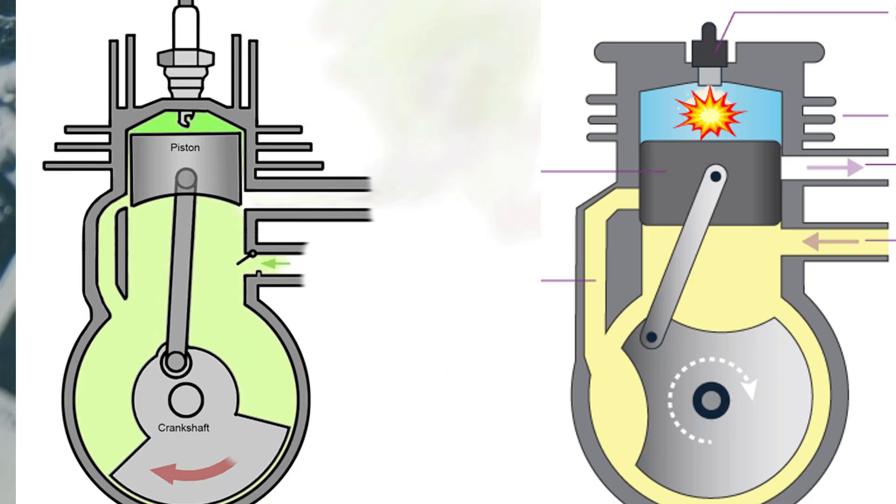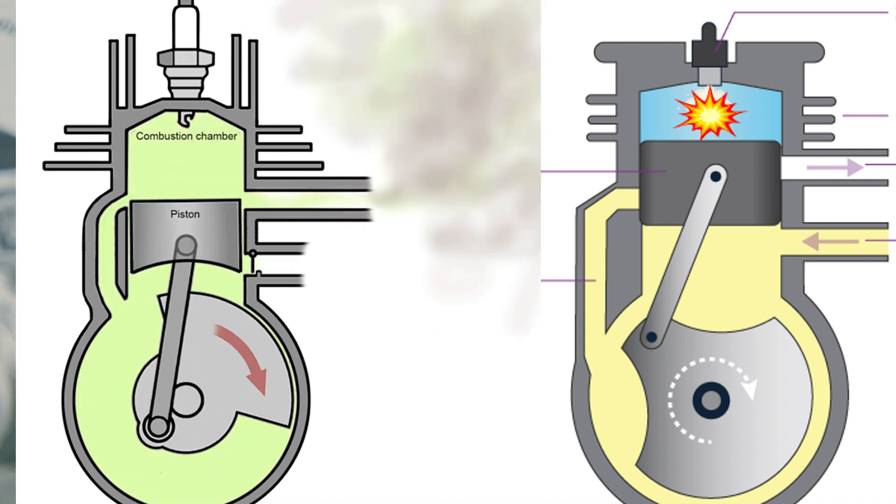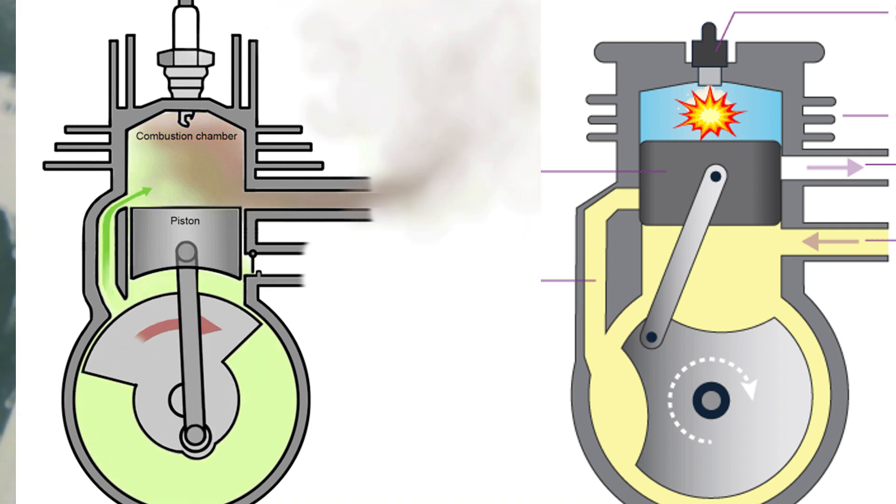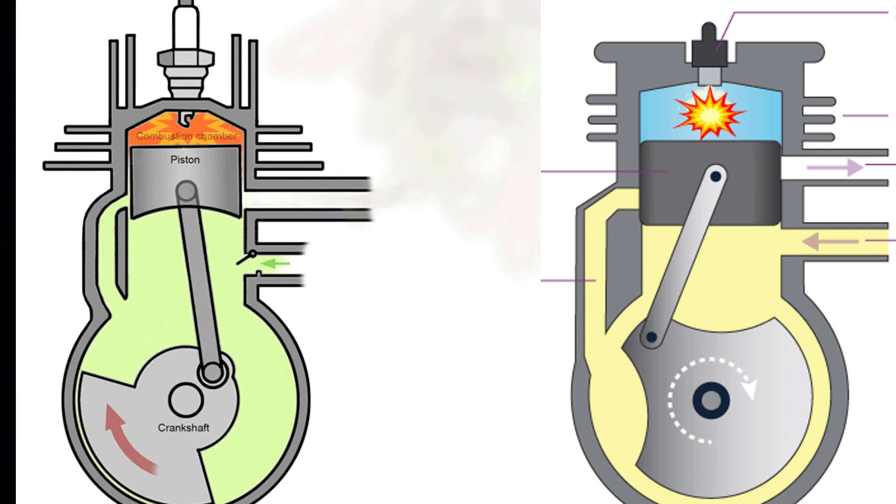Now, in a two-stroke engine, the piston completes the full cycle of intake, compression, power, and exhaust in just two strokes, one up and one down. That means every time the piston goes up and down, it creates power.